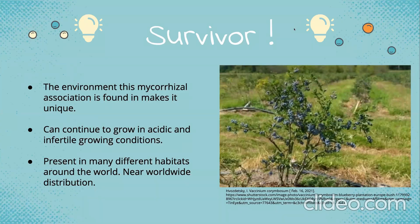One of the things we found unique about ericoid mycorrhiza is the environment in which you could find many ericoid plants surviving. Most plants cannot survive in acidic and infertile growing conditions, but this mycorrhizal association allows this family of plants to survive and thrive in that stressful environment. Additionally, we find these plants in many different habitats around the world, meaning they're slowly taking over many environments, and we now see a worldwide distribution of these plants.